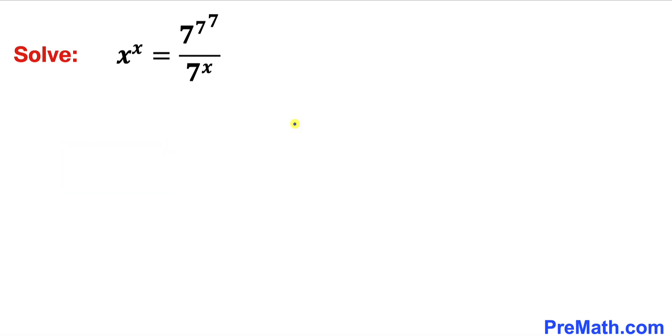Let's go ahead and get started with the solution. We can see that this is a tricky kind of problem, so we are going to manipulate it. I'm going to remove this fraction by multiplying 7^x on both the right hand side and left hand side.